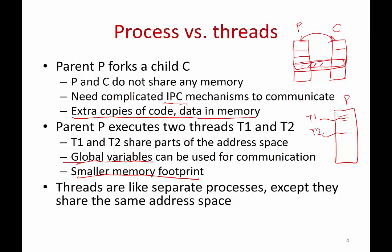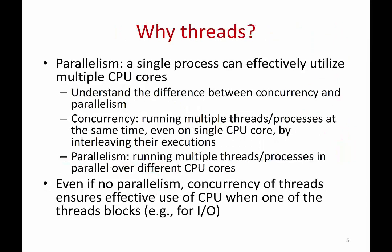Threads are just like separate processes — creating a multi-threaded program is like running multiple versions of the same program simultaneously, except they all share the same code and variables. Now that we understand what threads are, why do we need them? One important reason is parallelism. If you have a multi-core CPU and a process P running on one core, the other CPU core is idle. To get better performance and utilize all your hardware, you might want to run another version of the program on the other CPU core. At this point it's useful to understand the difference between two related but slightly different terms: concurrency and parallelism.